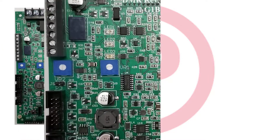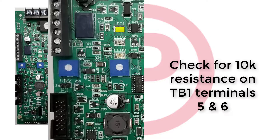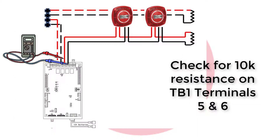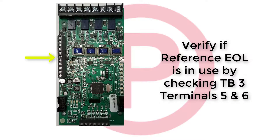If the yellow LED is on and the green LED flashes four times, then a speaker circuit is shorted. Using an ohmmeter, check for 10K of resistance on the speaker circuit wiring, terminal block 1, terminals 5 and 6. If the value is not 10K, verify that a reference end of line resistor is not being used prior to troubleshooting further. If a reference EOL is being utilized, then that value should match the speaker circuit resistance.